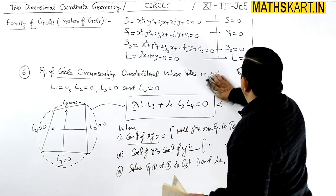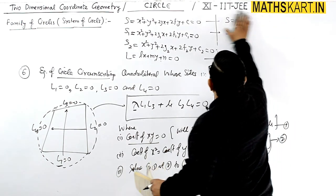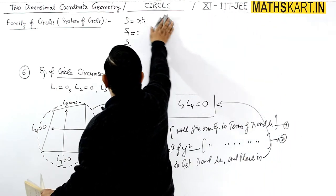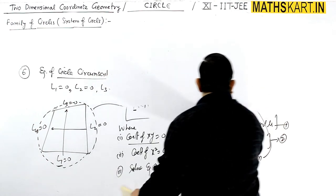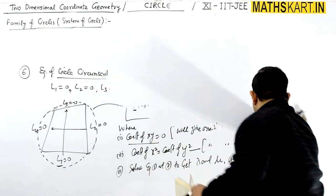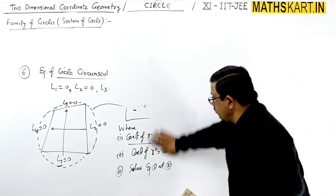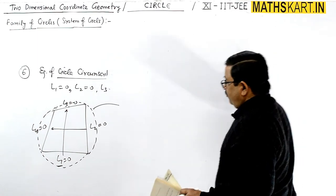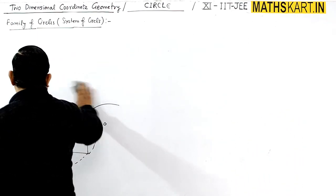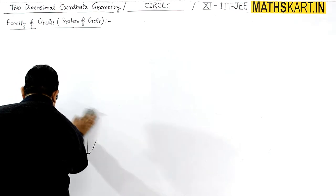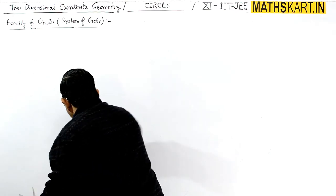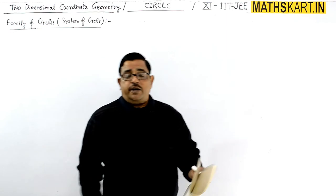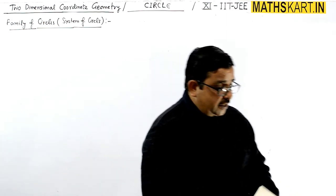This completes all the concepts of the family of circles — all 5–6 points have been covered in order. I suggest you watch the first two videos carefully for the theoretical concepts before proceeding to the questions in the second video.